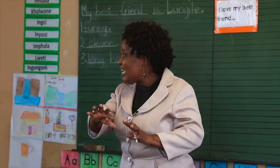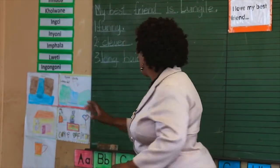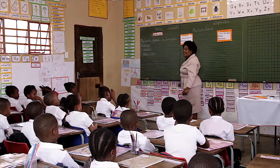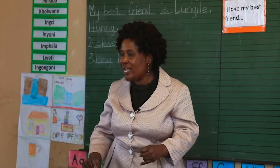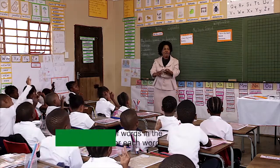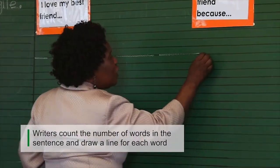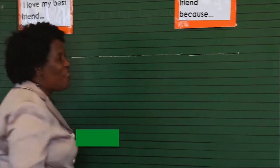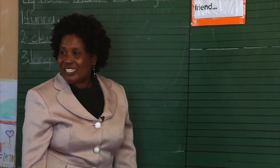We are going to write a paragraph about the theme. My best friend. Now we are going to write the sentence. Let us count the words first. Writers count the number of words in the sentence and draw a line for each word. Then I put a full stop at the end of a sentence. So now let us write the sentence.